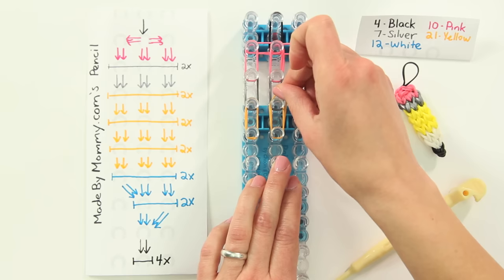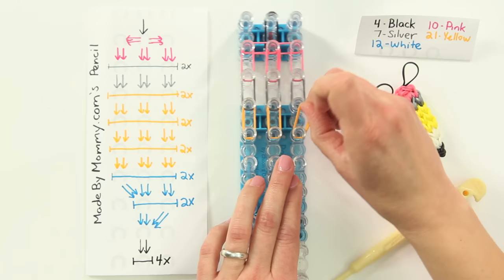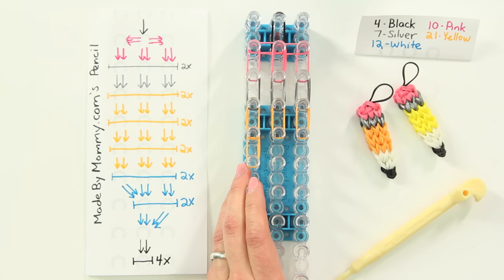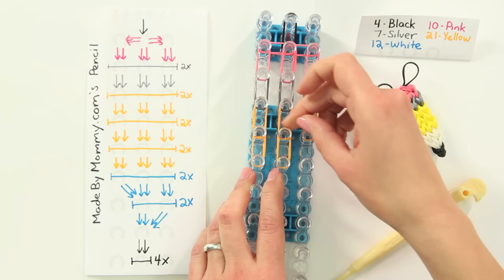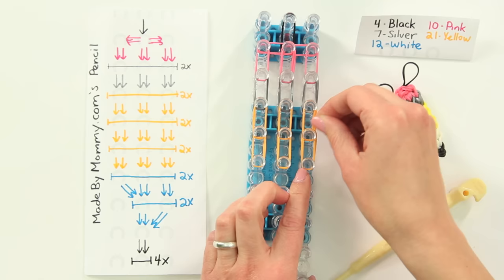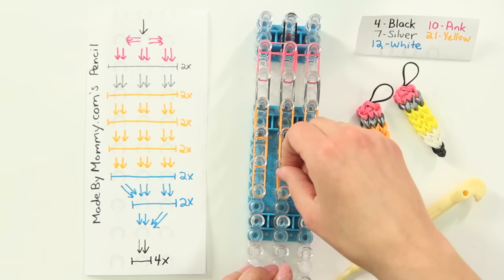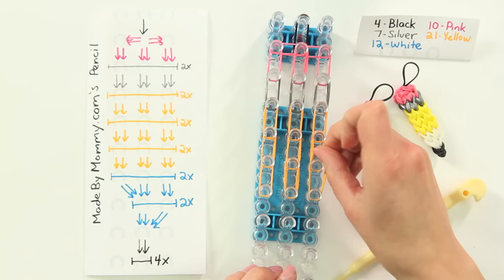Now, we're going to do two at a time again. One on the left, on the center, and on the right sides. So, now we're ready to switch to white.